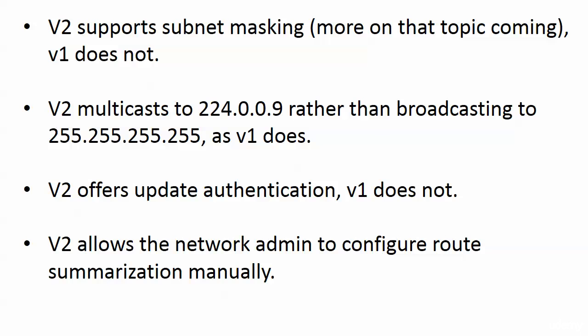Before being accused of RIP version 2 shaming — version 2 was quite an improvement over version 1, and you should know the differences. Version 2 supports variable-length subnet masking (VLSM); version 1 does not. Version 2 multicasts its updates to 224.0.0.9; version 1 broadcasts. Version 2 offers update authentication; version 1 does not. And version 2 allows the network administrator to configure route summarization manually, while version 1 doesn't allow that.